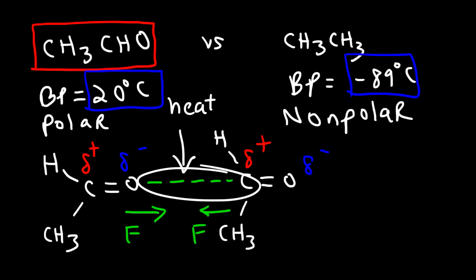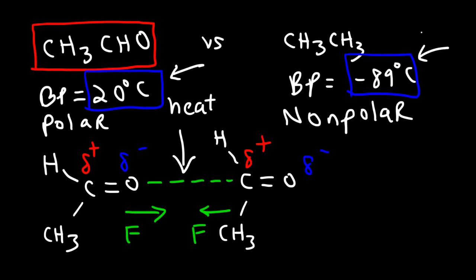To do that, you have to add heat to break the interactions that hold the molecules together. The stronger the interaction, the more thermal energy you need to break those dipole-dipole interactions, thus increasing the boiling point. A molecule with a high boiling point tells you that you need more thermal energy to break the intermolecular forces. In the case of ethane, the boiling point is so low that the intermolecular forces holding ethane molecules together are very weak — it doesn't require much thermal energy to separate them because of its weak LDF forces.